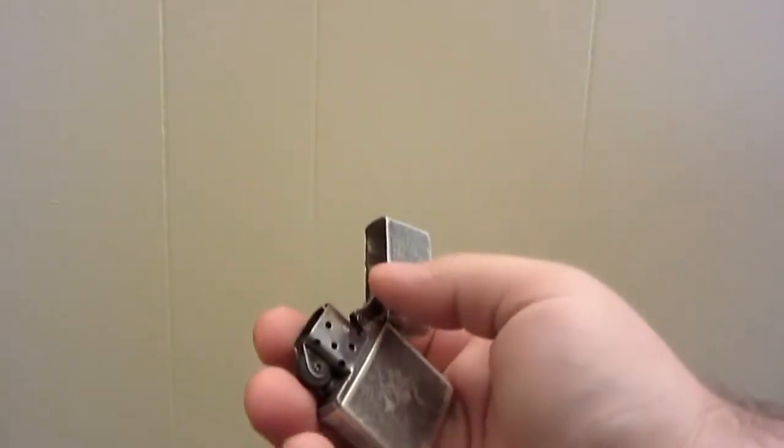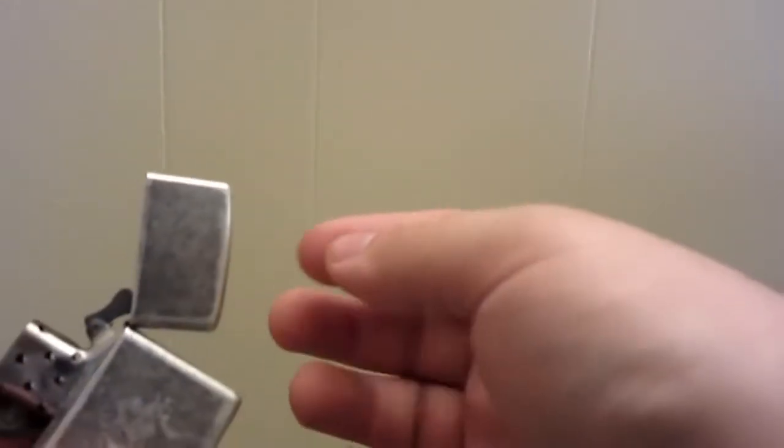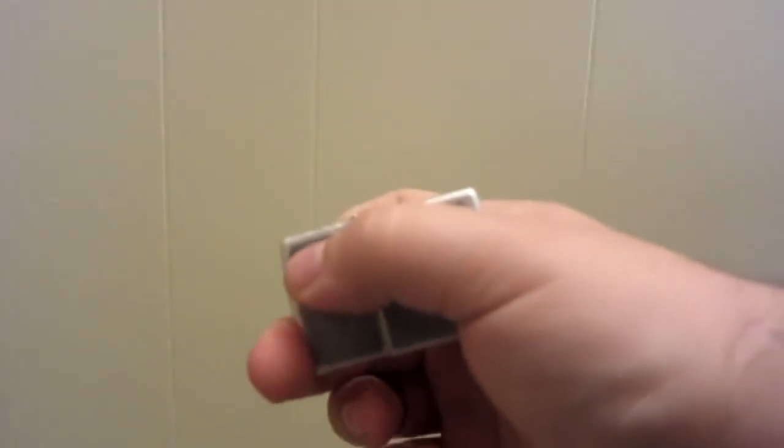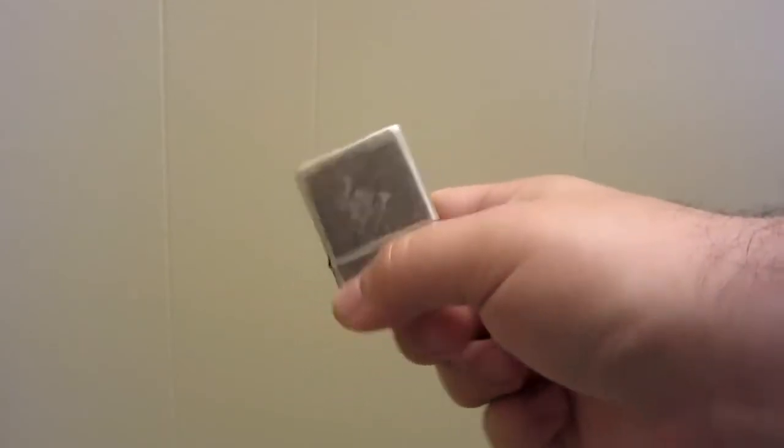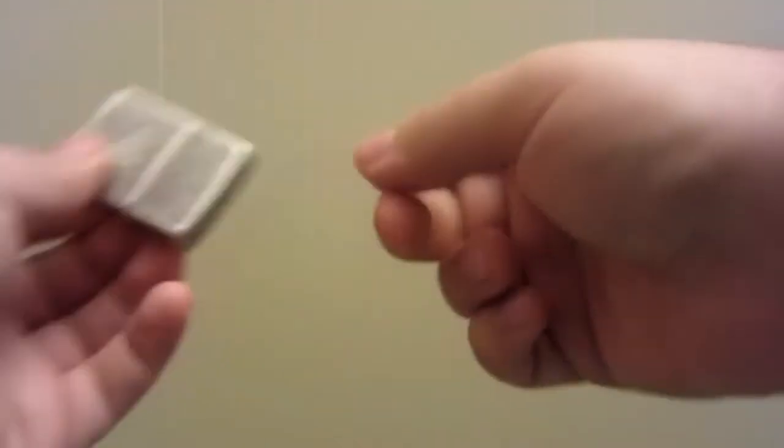Now what you want to do with your grip on your pointer finger and thumb here is keep it kind of a medium grip. You don't want it too hard because if you're gripping this too hard, when you squeeze, it's going to stop. It's not going to spin around. But if it's too loose, it's going to just fly right out of your hands.